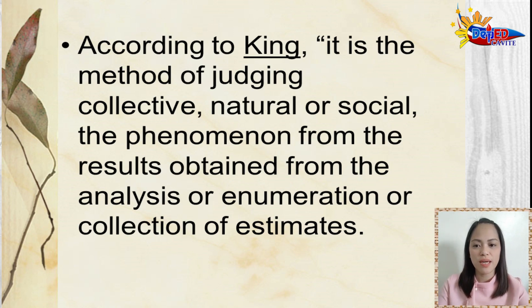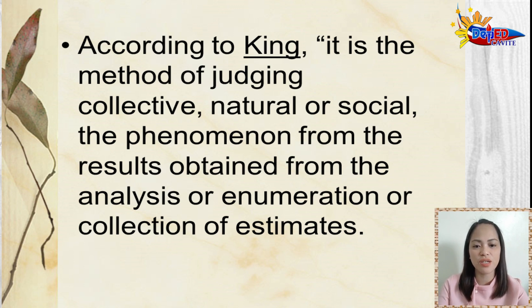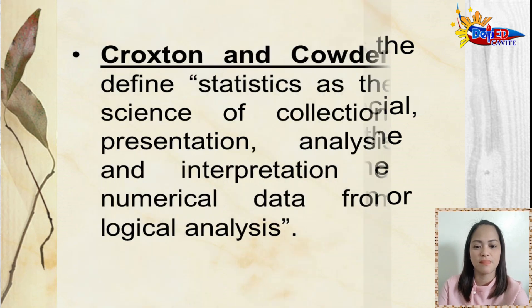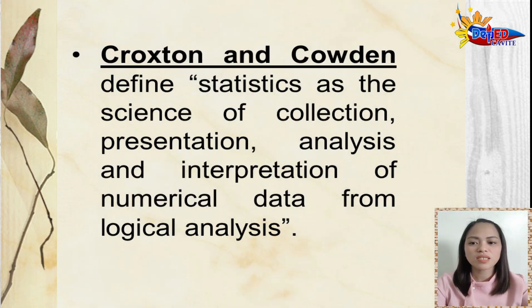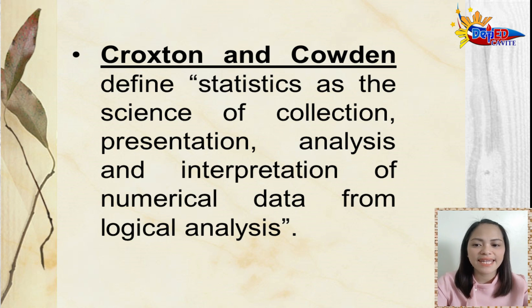According to King, it is the method of judging collective, natural, or social phenomenon from the results obtained from the analysis or enumeration or collection of estimates. Croxton and Coden define statistics as the science of collection, presentation, analysis, and interpretation of numerical data from logical analysis.